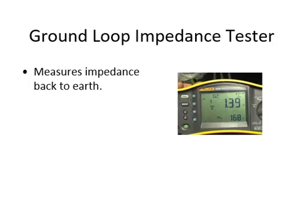It's a way to measure the resistance back to earth, or impedance back to earth. Resistance is direct current; impedance is alternating current.